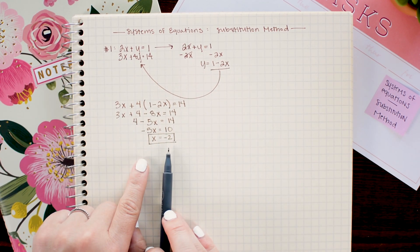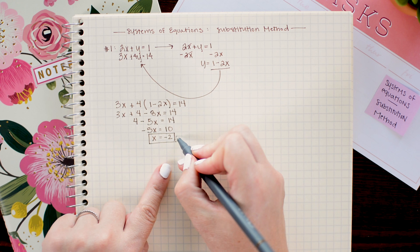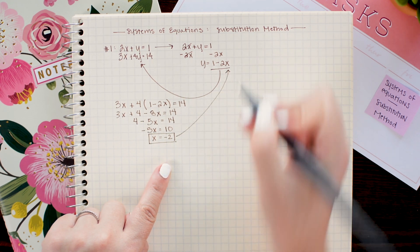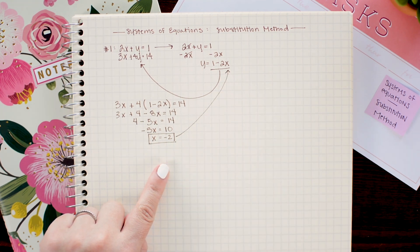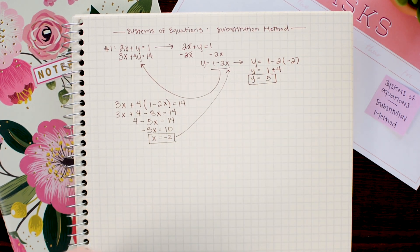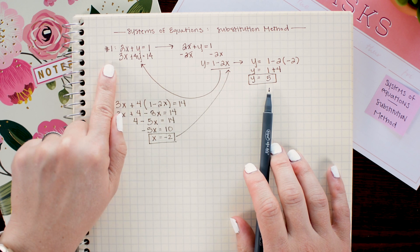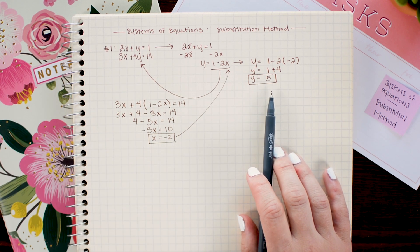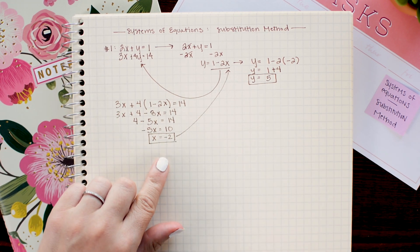Now that I know what x is, I can go ahead and plug it back into this equation here to find y. Now we have discovered the x and y coordinate where these two lines intersect and I'm just going to write my final answer as a coordinate point.